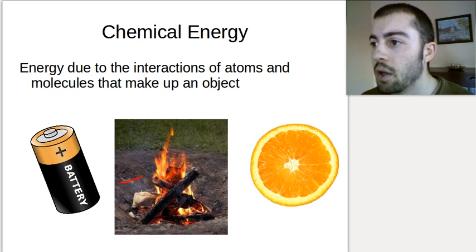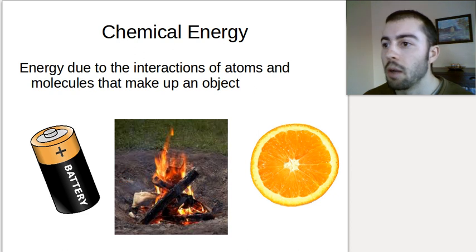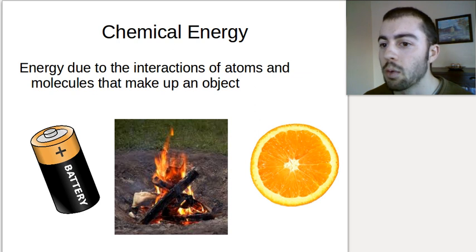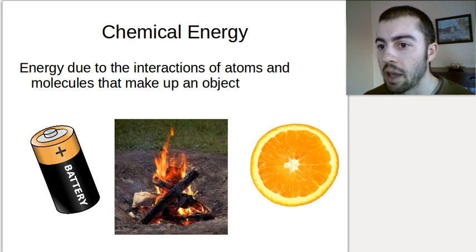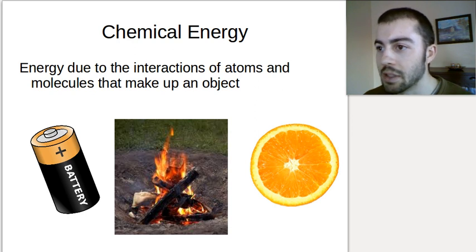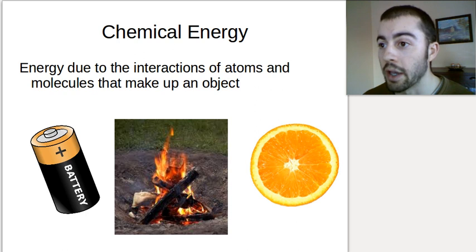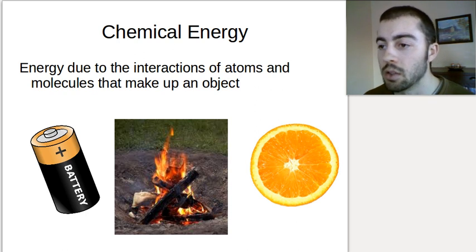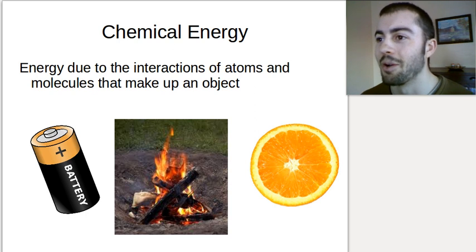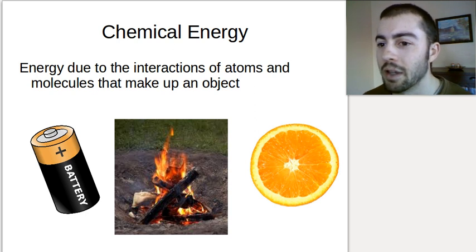Another example of chemical energy is burning anything — burning wood, burning gasoline. That stuff has chemical energy, and when we burn it, we're releasing that chemical energy and using it to make fire. The fire itself is not chemical energy, but what we're burning has chemical energy in it, and we're using it up to sustain the fire, make our cars go, or whatever the purpose of the burning is.